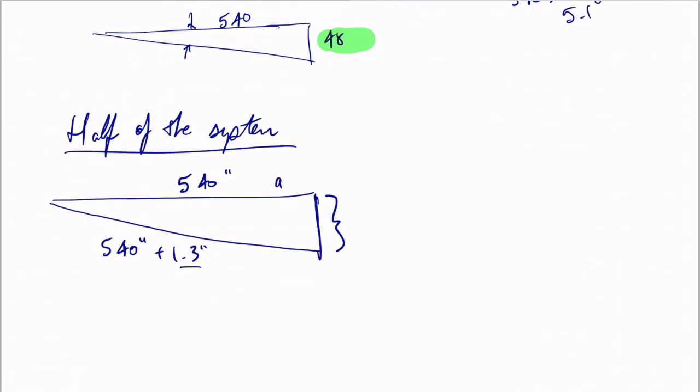Remember Mr. Pythagoras says that a squared plus b squared is equal to c squared. So b is equal to square root of c squared minus a squared. So square root of 541.3 squared minus 540 squared.